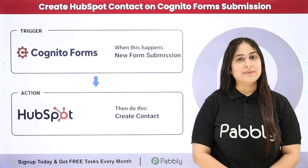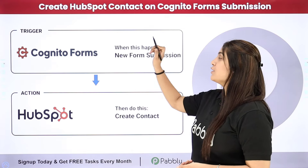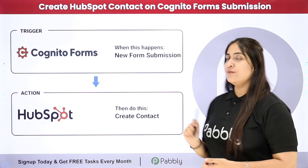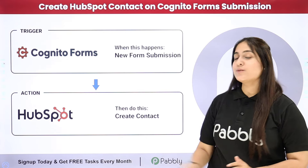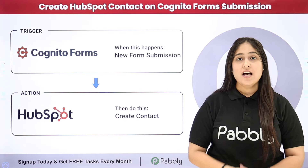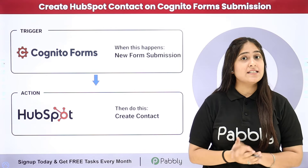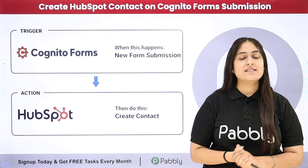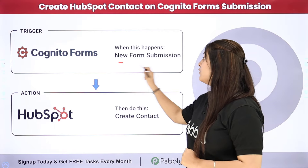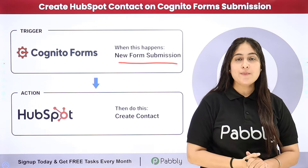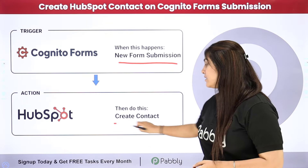Hello everyone, welcome back to Pabbly. In this video we are going to understand how to create a HubSpot contact on Cognito Form submission. I run a business and we use Cognito Forms to receive new leads. Manually adding leads received to any other CRM is a very tedious task, so I have planned to automate this entire process. Whenever I receive a new form submission through my Cognito Form, that lead should automatically be added as a new contact in my HubSpot CRM account.